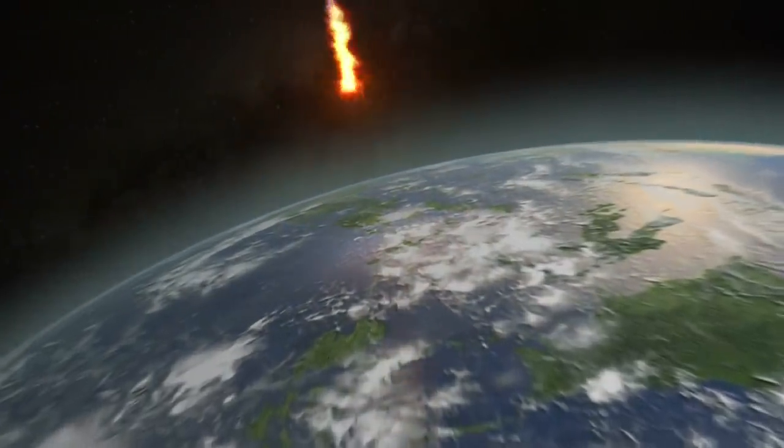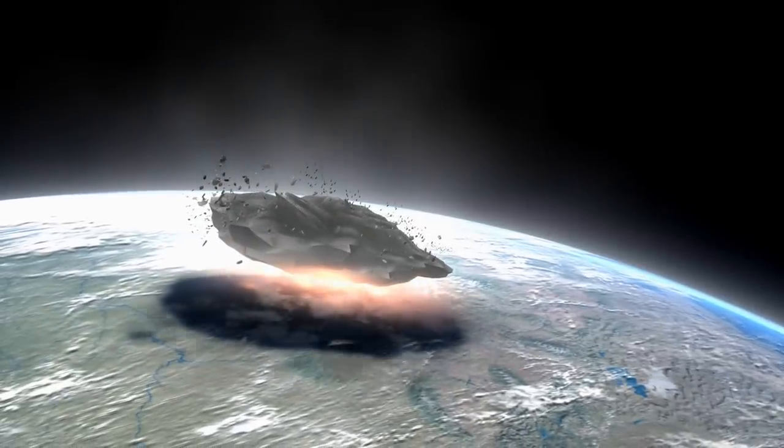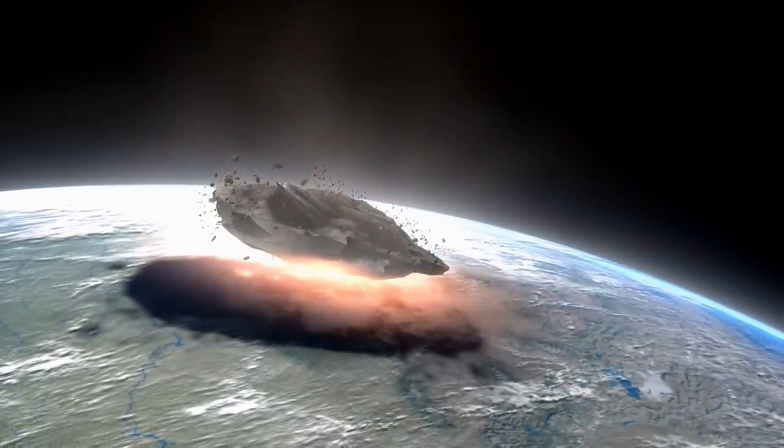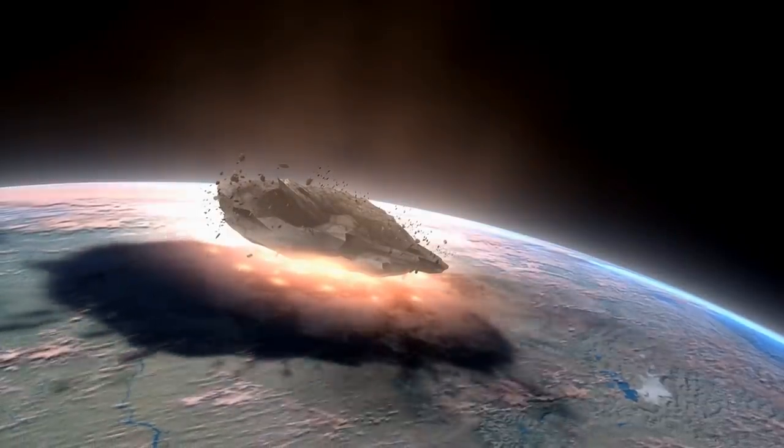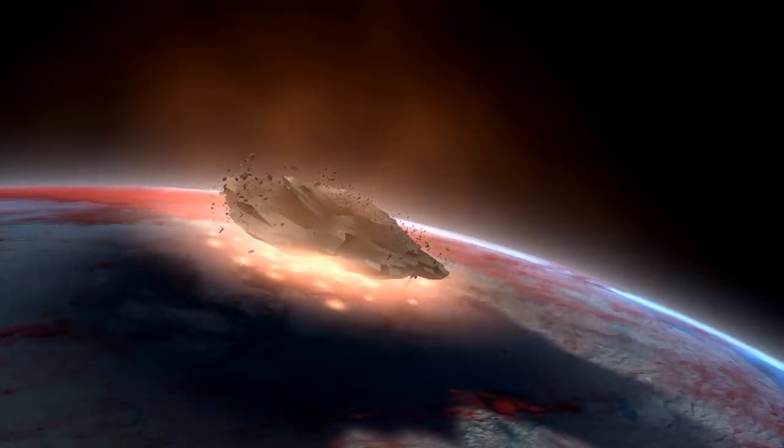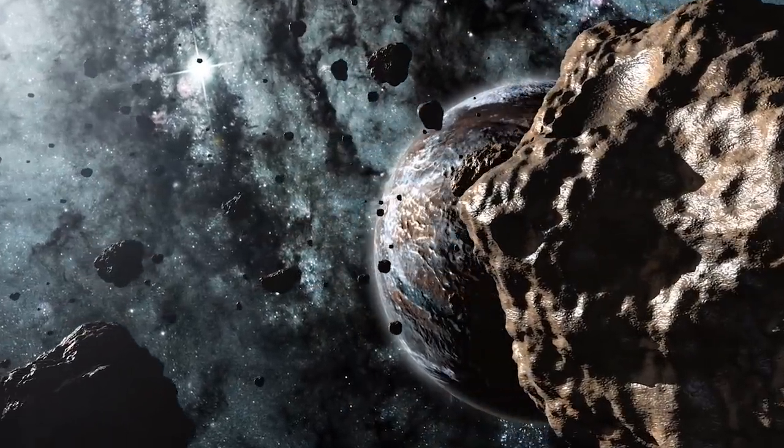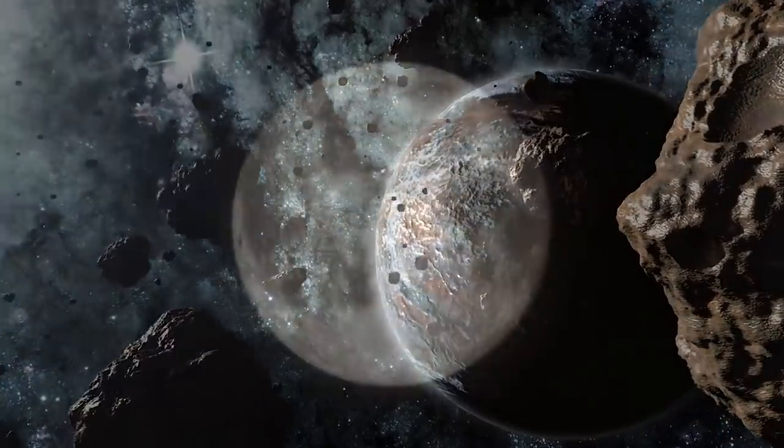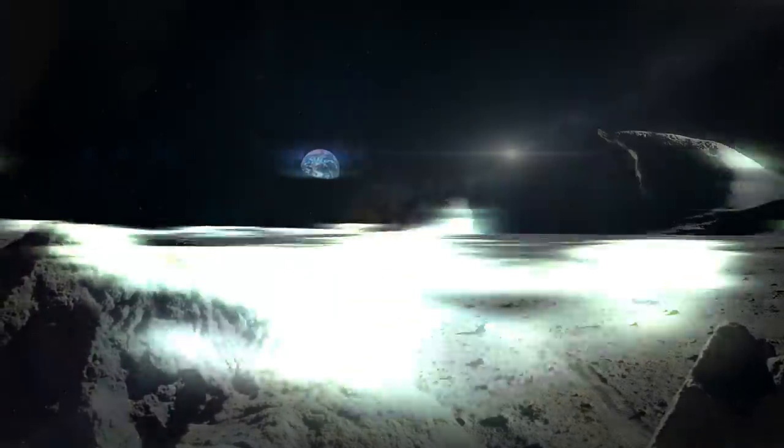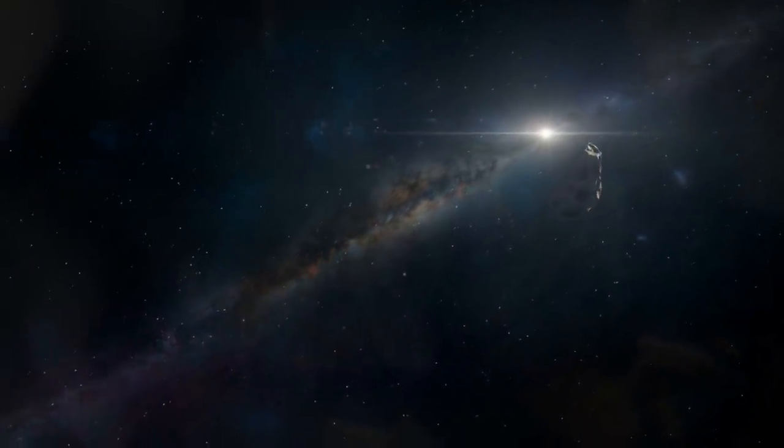We call these collisions cosmic impacts, or impact events. These happen when astronomical objects such as asteroids, planets, meteorites, and comets crash into one another, resulting in scalable impact around it. This effect can vary from a simple creation of a crater on a planetary surface, like we see on the moon, or to something as grand as the creation of a new moon, like what happened to Earth when the asteroid Theia collided with it.